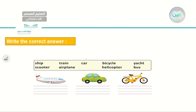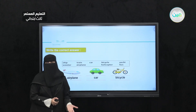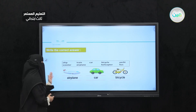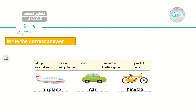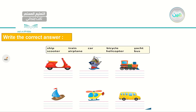Let's start with the first picture — I have an airplane. The one in the middle — I have a car. How about the next one? I have a bicycle — we might also say bike. Let's read our answers: airplane, car, bicycle. Now let's go to the other pictures and read the answers: ship, train, car, bicycle, yacht, scooter, airplane, helicopter, and bus. The first one is a scooter. Right next to it — it is a ship, a huge ship. And right next to it — I have a train.